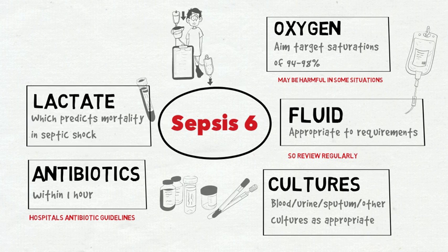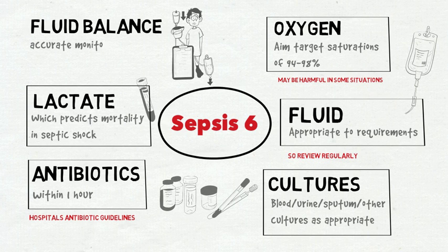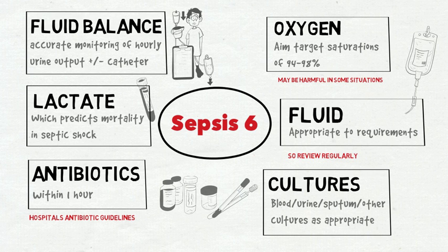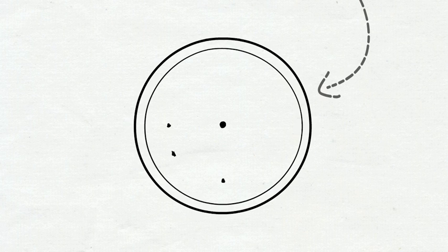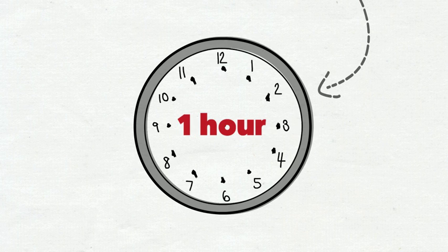Fluid balance. Accurate monitoring of hourly urine output plus or minus catheter, plus senior review ST3 and above. This should all occur within one hour of first suspicion of a patient having severe sepsis.